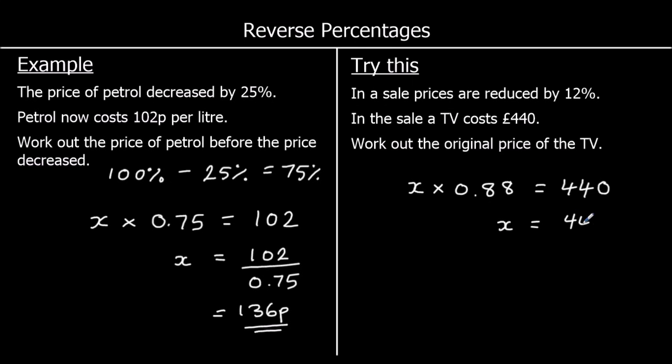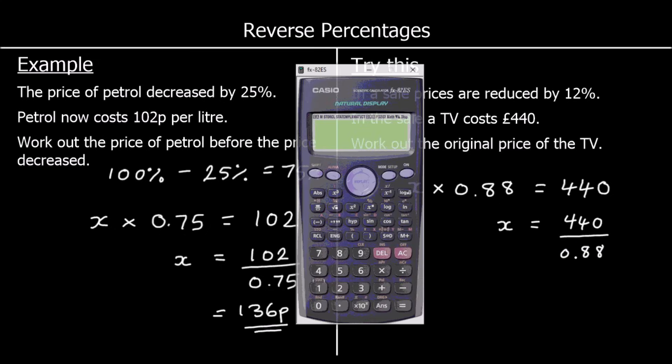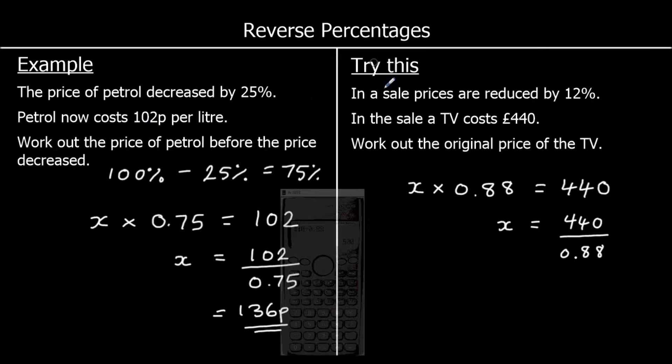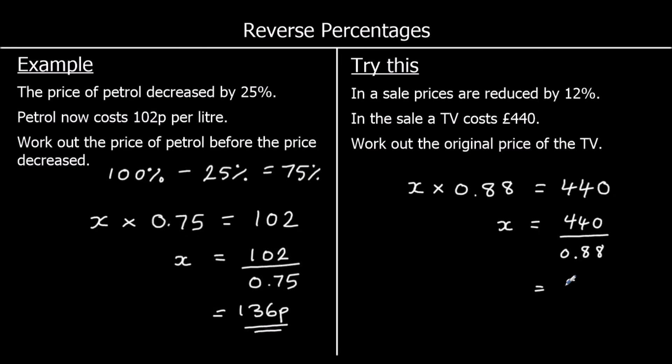So 440 divided by 0.88. Type it into the calculator. And we get 500. So the original price of the TV is 500 pounds. If we've got 500 pounds and we take off 12%, we get 440 pounds.